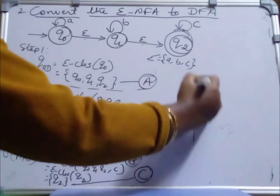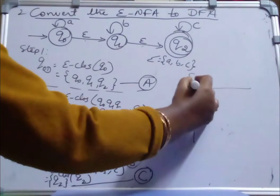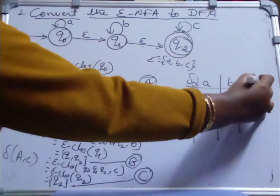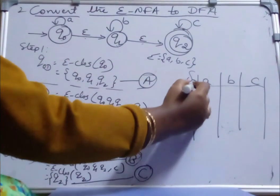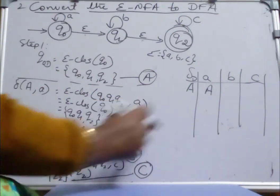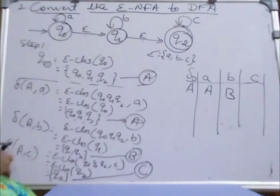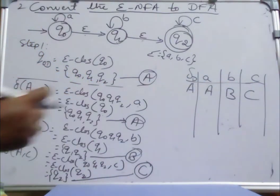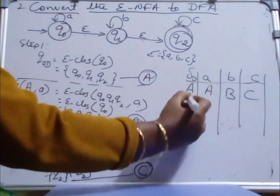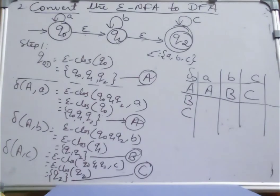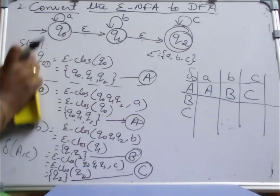We will write the transition table. We have three input symbols: a, b, and c. For state A: A on a is moving to A, A on b is moving to B, and A on c is moving to new state C. B and C are new states, so we need to find the transitions for B and C on input symbols a, b, c.